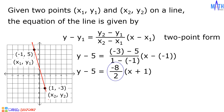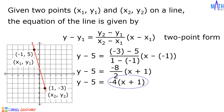Since negative 8 over 2 is equal to negative 4, then we have y minus 5 equals negative 4 times quantity x plus 1. Next, we have negative 4 multiplied by x plus 1 equals negative 4x minus 4. Then we have y minus 5 equals negative 4x minus 4.